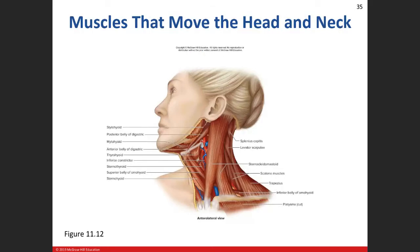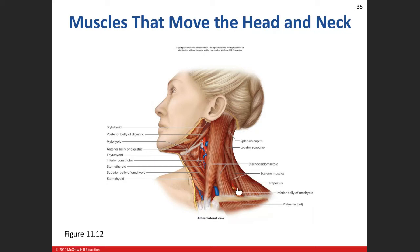Here you can see the sternocleidomastoid muscle, and the scalene muscles on the side. This is a nice picture because it shows both points of origin — the sternal origin and the clavicular origin. Right behind it, though it's tough to see, are the scalene muscles: anterior, middle, and posterior. They attach onto the first and second ribs to help elevate those ribs.